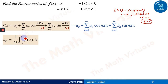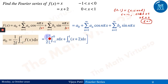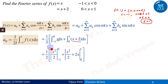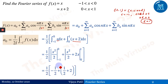a₀ equals 1 upon 2l times the integral from minus l to l of f(x) dx. Since we have the interval minus l to l, we put l equals 1, giving 1 by 2 times the integral. Because f(x) is a piecewise function defined on two intervals — f(x) equals x from minus 1 to 0, and f(x) equals minus x plus 2 from 0 to 1 — we split the integral. Integrating gives x²/2 from minus 1 to 0 plus x²/2 plus 2x from 0 to 1. After applying limits, the value of a₀ equals 1.